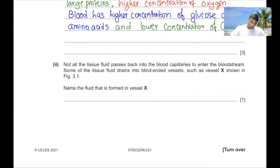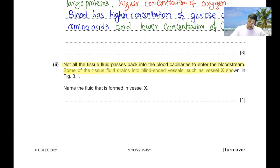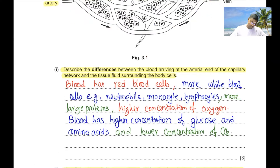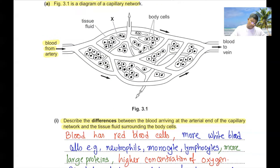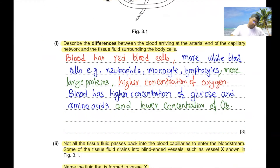Not all tissue fluid passes back into blood capillaries. Some drains into blind-ended vessels such as shown at region X in figure 3.1. The fluid formed in vessel X is lymph, as vessel X represents the lymphatic system.